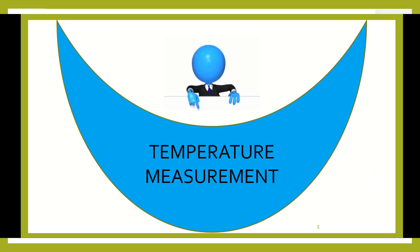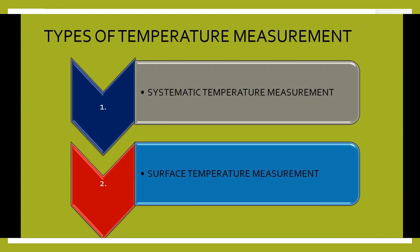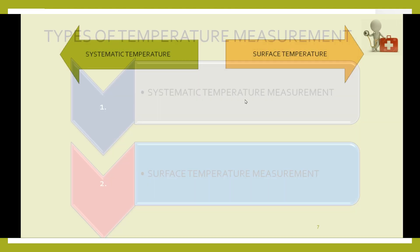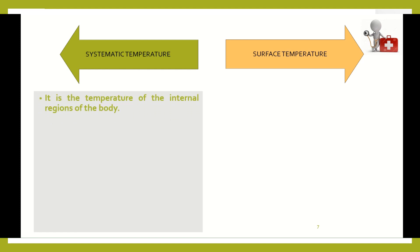Now we will move to the topic of temperature measurement. There are different types: the first is systematic temperature measurement and the second is surface temperature measurement. Systematic temperature is the temperature generated due to the internal organs of our body — it is created due to the internal regions of the body.